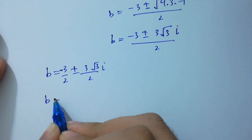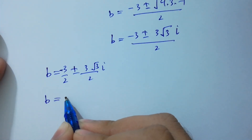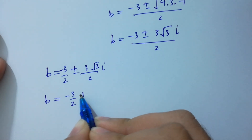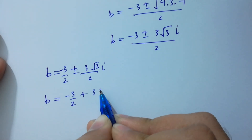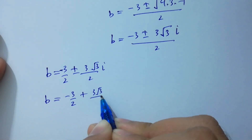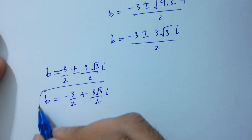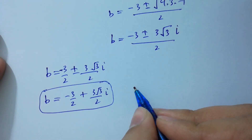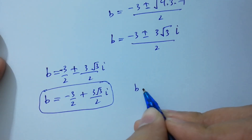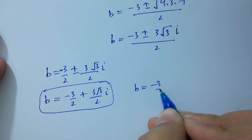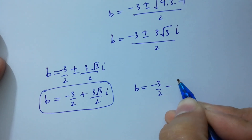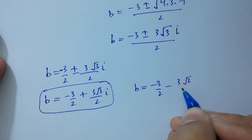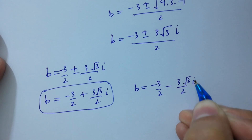The fifth solution is B equals minus 3/2 plus 3√3/2 · i, and the sixth solution is B equals minus 3/2 minus 3√3/2 · i.